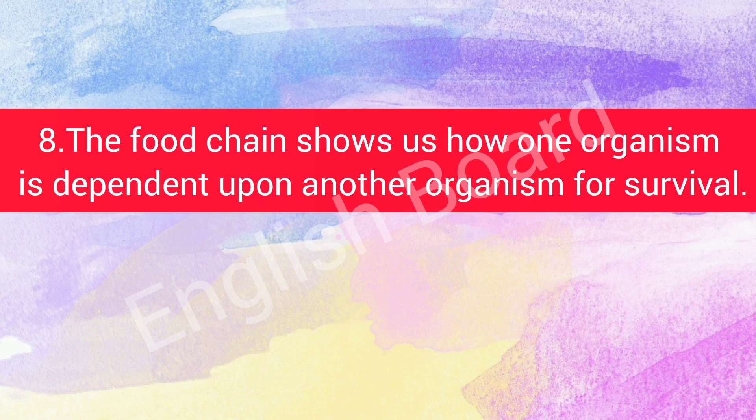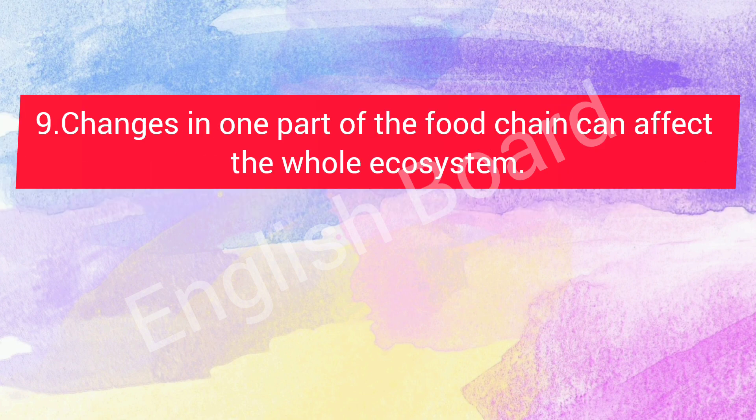The food chain shows us how one organism is dependent upon another organism for survival. Changes in one part of the food chain can affect the whole ecosystem.